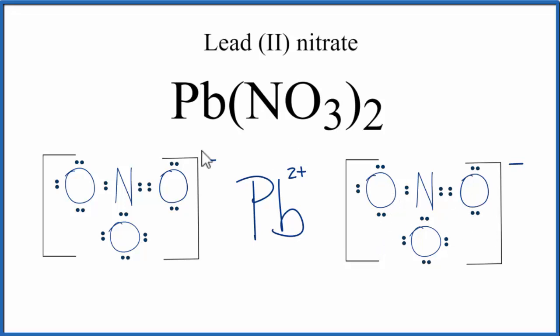Do note that this is what's called a formula unit. With lead two nitrate, it's normally a crystal, and in that crystal we have many of these formula units repeating.